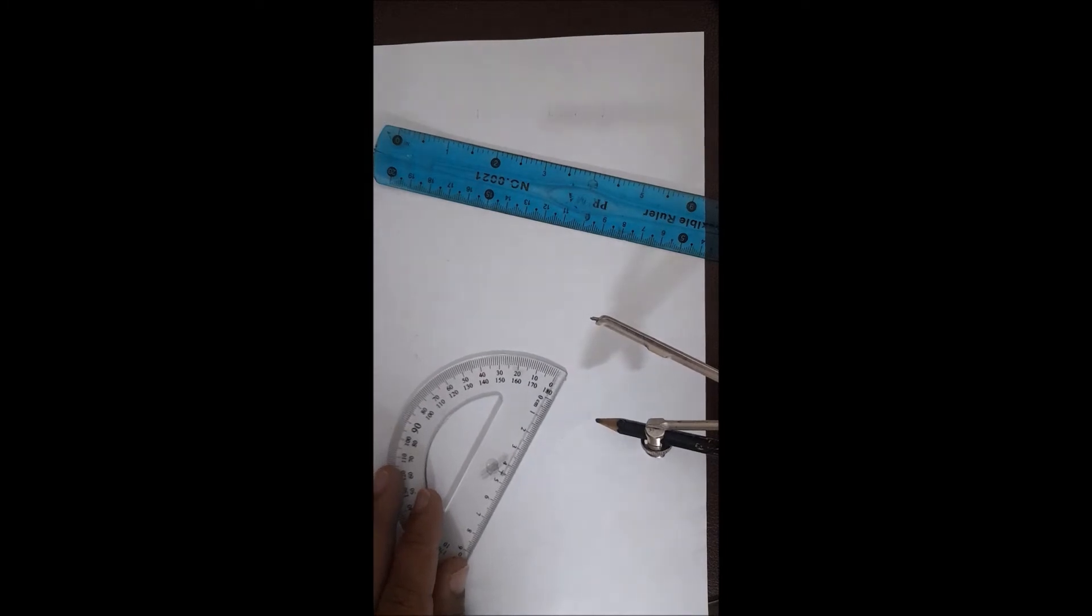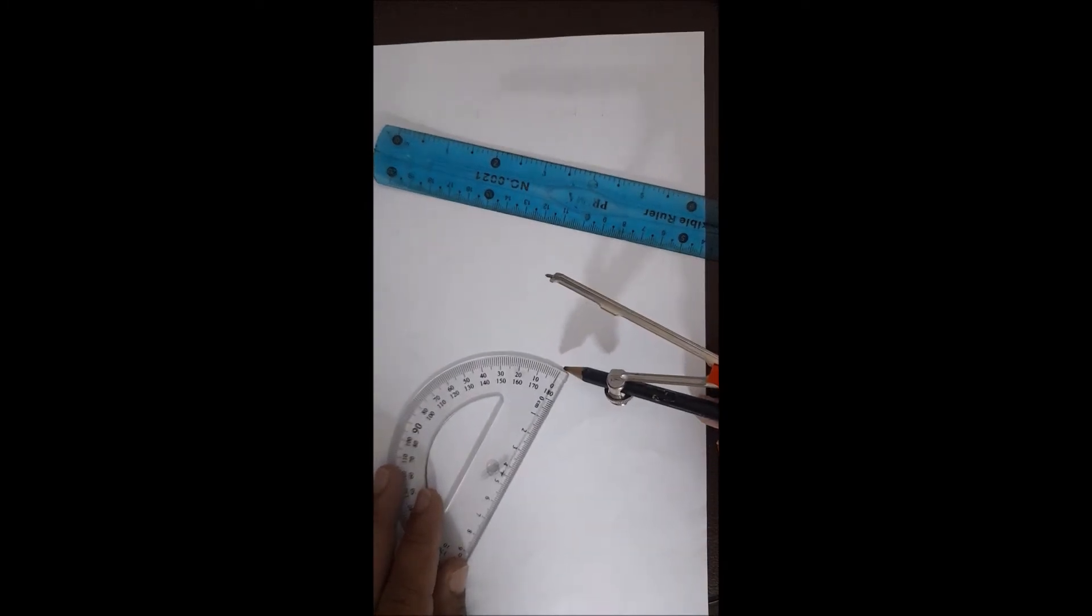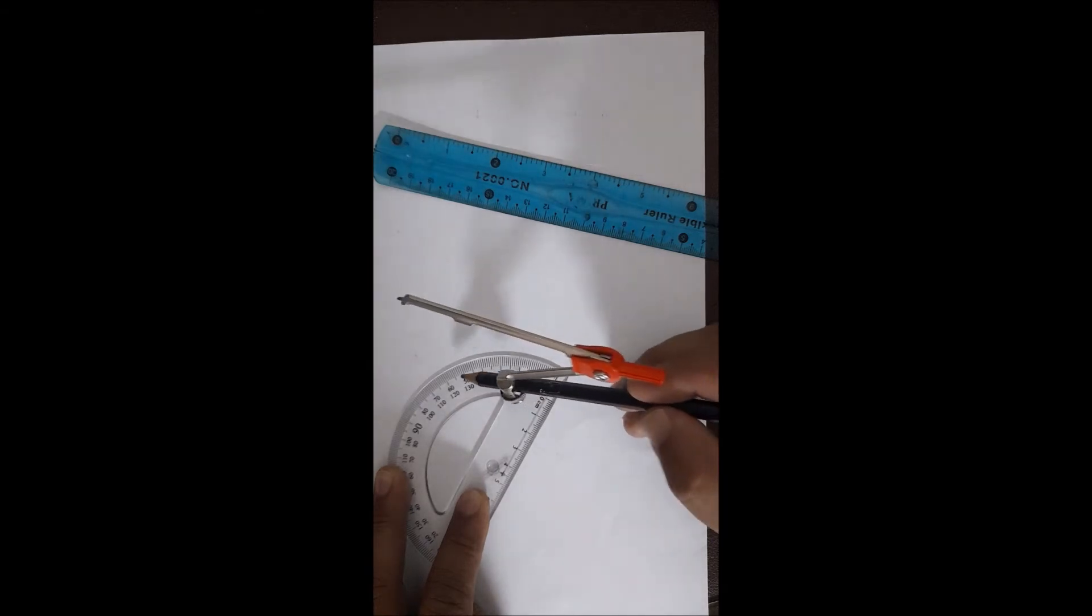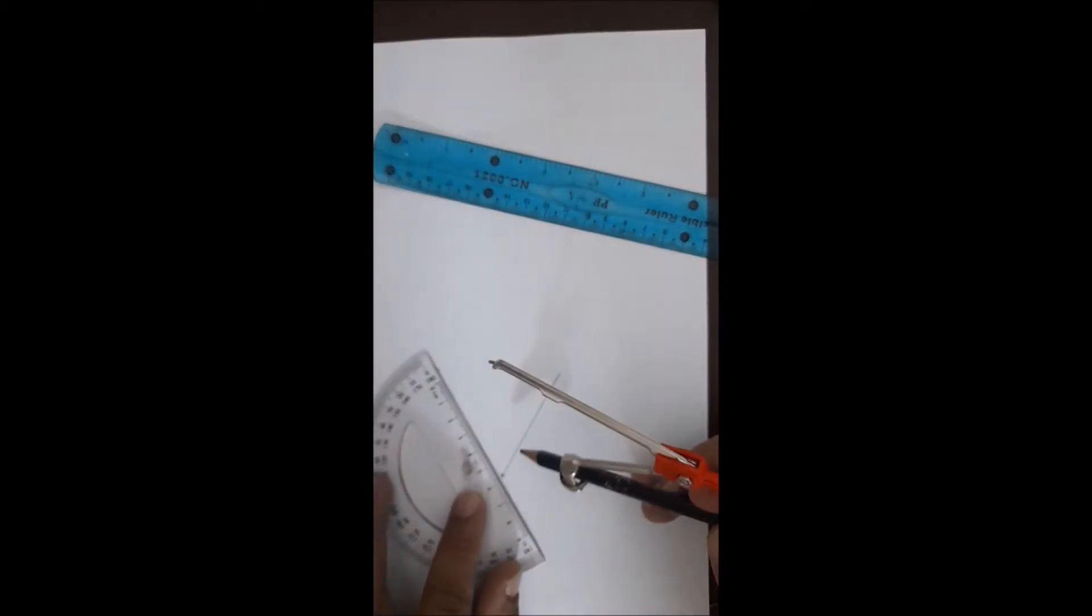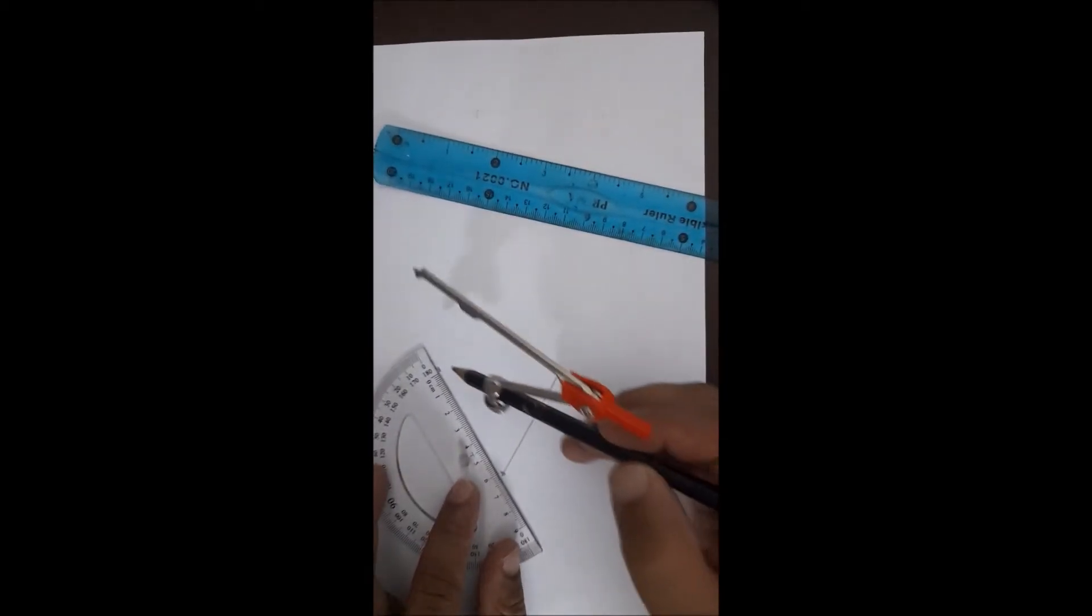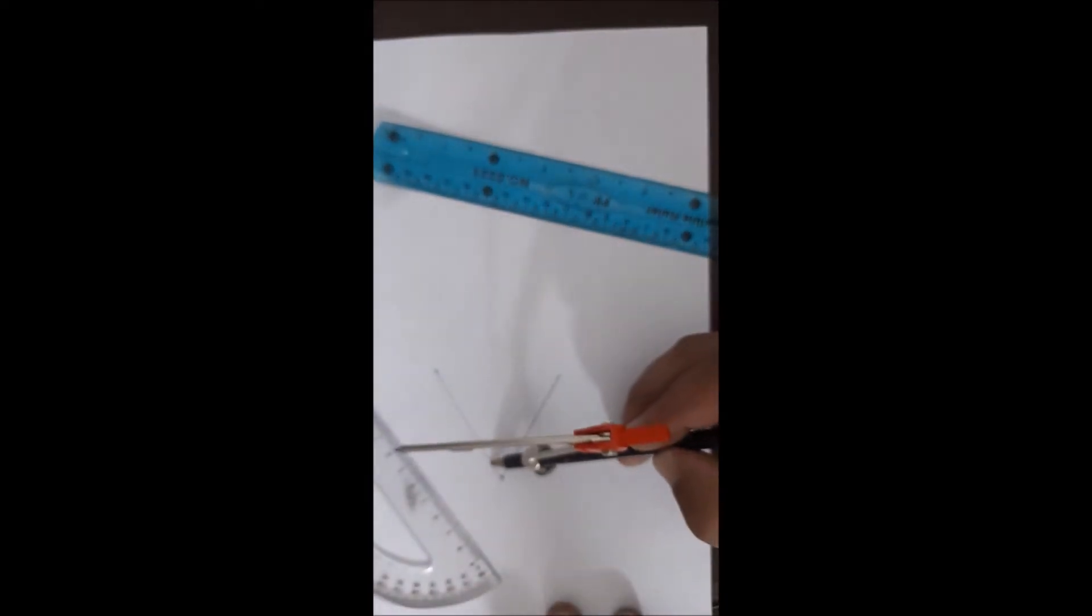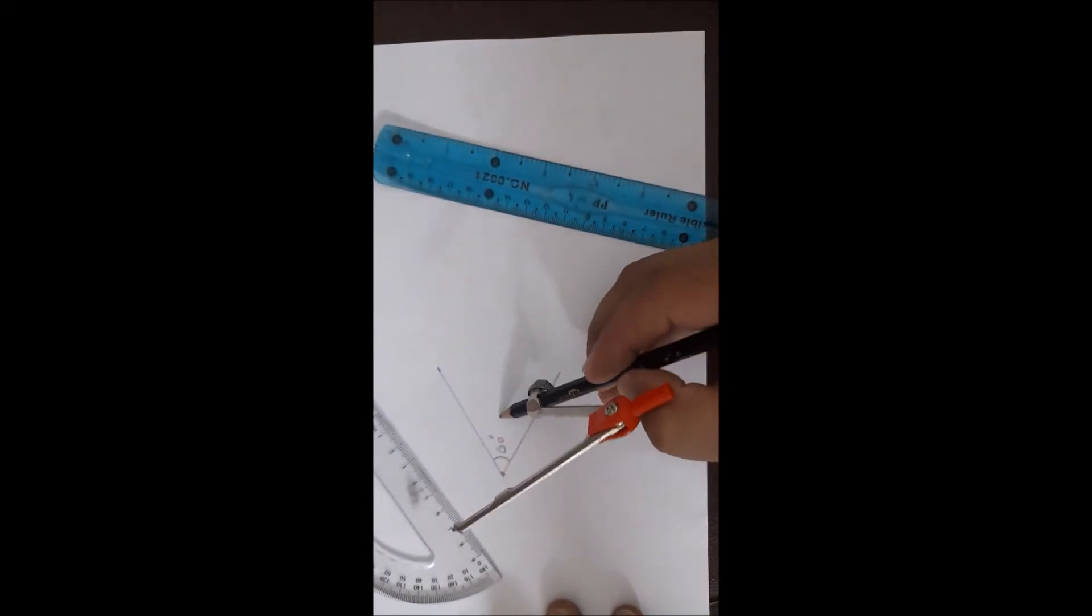And here at 180, exactly align this line on the edge. Start counting the outer numbers: 0, 10, 20, 30, 40, 50, 60. Then we will join this dot to the corner of the line. This is 60 degrees, which is an acute angle.